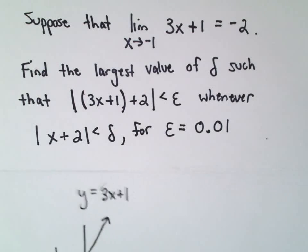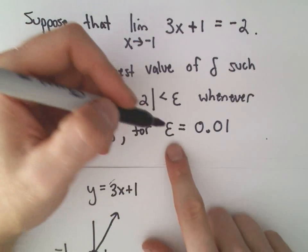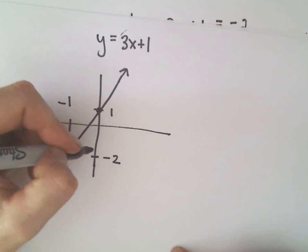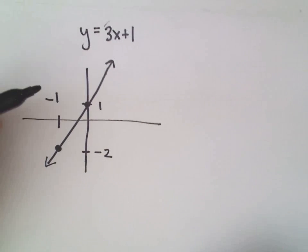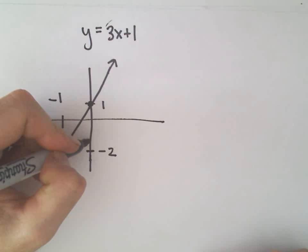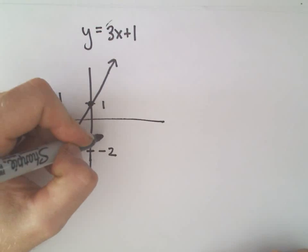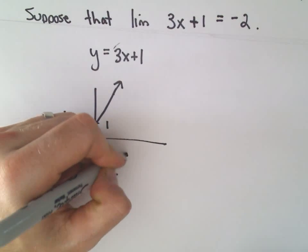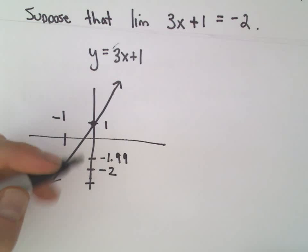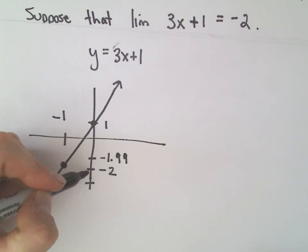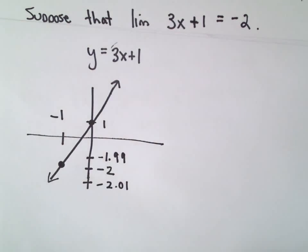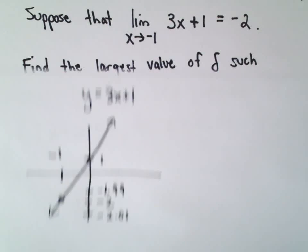All this original condition says is, okay, so epsilon is going to be 0.01. So that says we want to be less than 0.01 away. So if we were exactly 0.01 away, we would be at the number negative 1.99 if we were below negative, or I guess a number bigger than negative 2. And if we look at the number that's smaller than negative 2 by 0.01, we would be at negative 2.01.